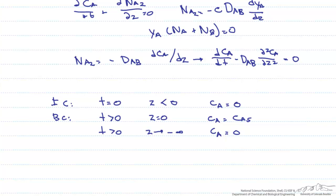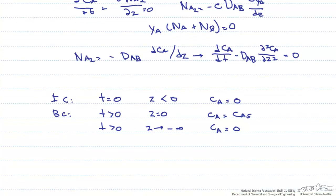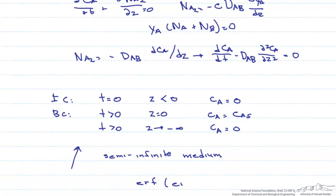With these differential equations, initial conditions, and boundary conditions, it is possible to solve for the concentration of A. This last situation is known as a semi-infinite medium — there is only one definable surface and it extends to infinity in the other direction. Soil is usually modeled as a semi-infinite medium, and solutions often include what is known as the error function.